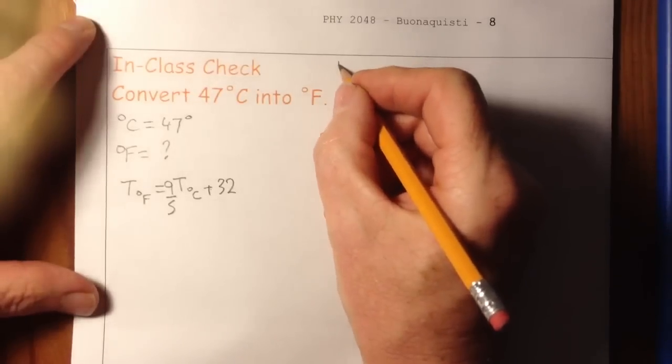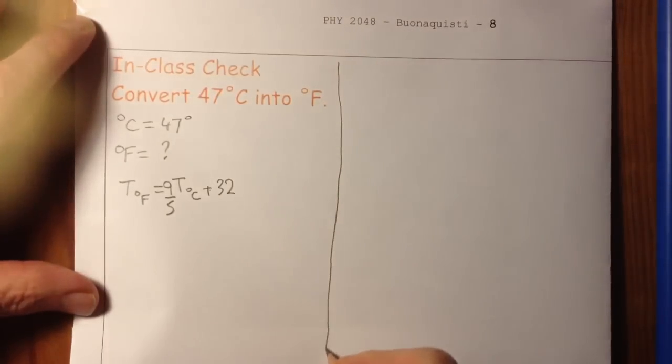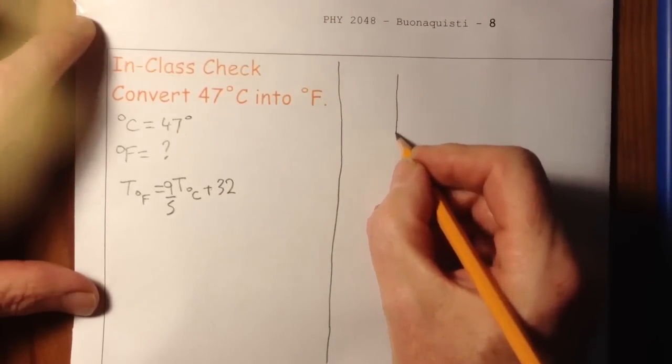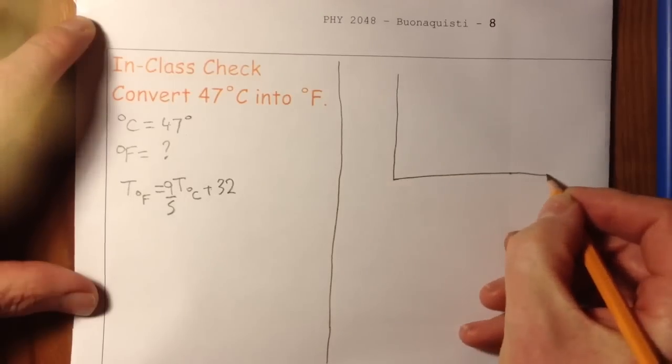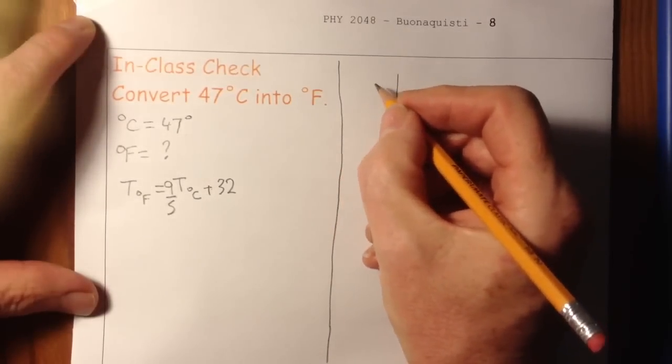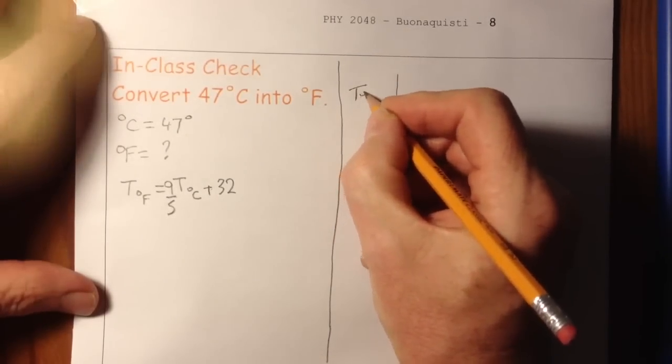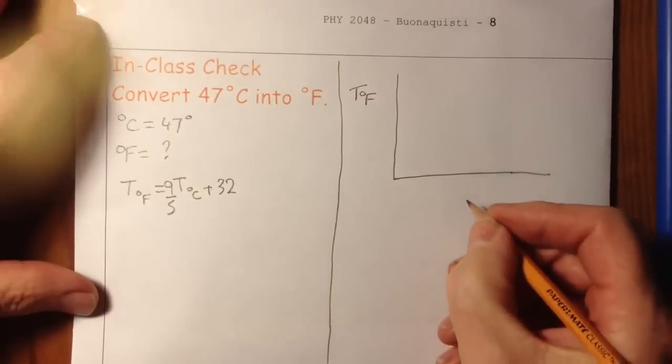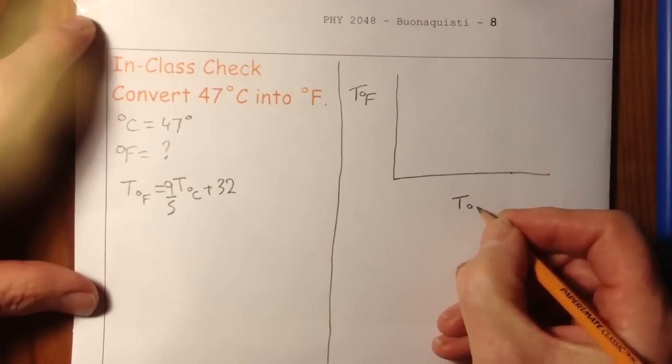How did I know that? Well, it's on the equation sheet, but in addition, I can figure that out quite easily. Because if I plot a graph of temperature in degrees F versus temperature in degrees C.